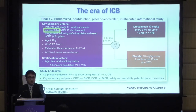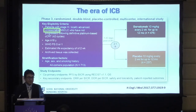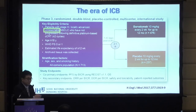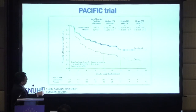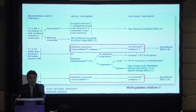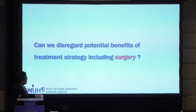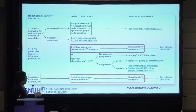We are now entering the era of immune checkpoint blocking agents. A randomized double-blind placebo-controlled multicenter international study for unresectable stage 3A patients showed a much better outcome for immune checkpoint inhibitors than placebo. The NCCN guideline is changing — immune checkpoint inhibitors are now standard care for locally advanced and advanced lung cancer patients.